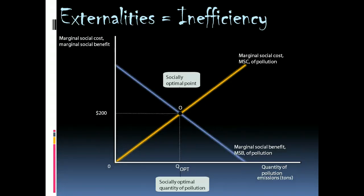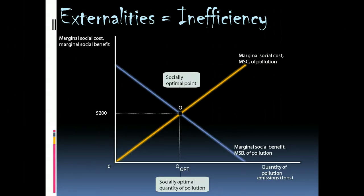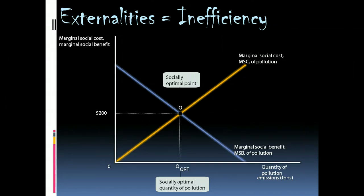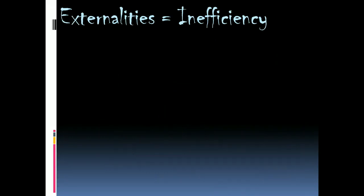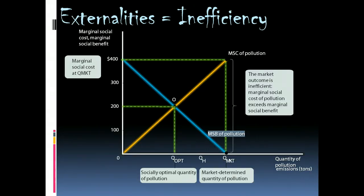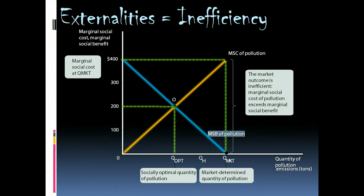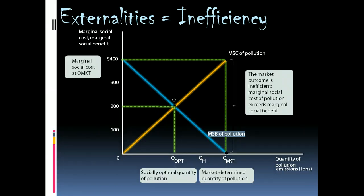In a perfect world, we would look at the marginal social cost and the marginal social benefit, find where they intersect, and that would be the optimal amount of pollution. The problem is that if you're a polluter, you don't take into account the impact on society — you only look towards yourself. In an unregulated world, a polluter would keep going until his marginal social benefit is equal to zero — there's no more gain for him — and that is where an unregulated producer would choose to pollute, resulting in Q market as the amount of pollution.